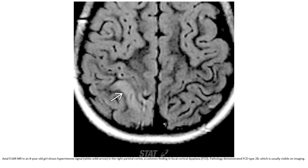So let's see the first case. This is the axial FLAIR image, showing a hyperintense signal in the parietal cortex — a common finding in focal cortical dysplasia. This partially demonstrates focal cortical dysplasia Type B, which is usually visible on imaging.